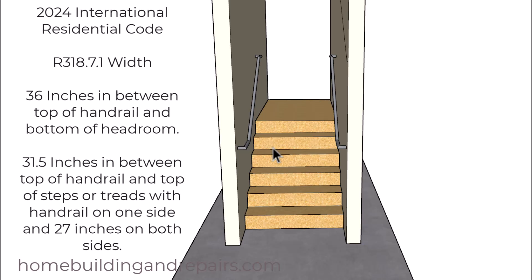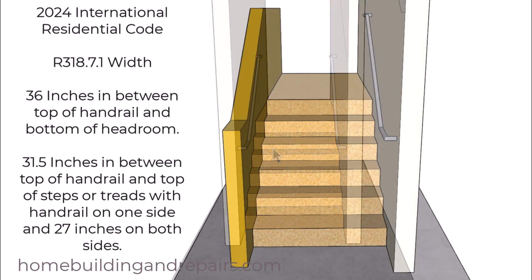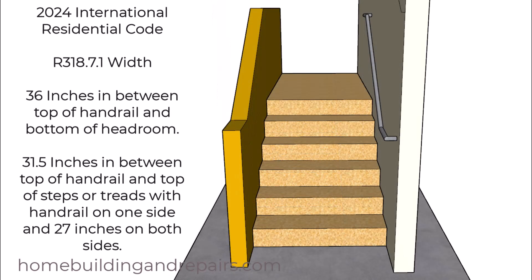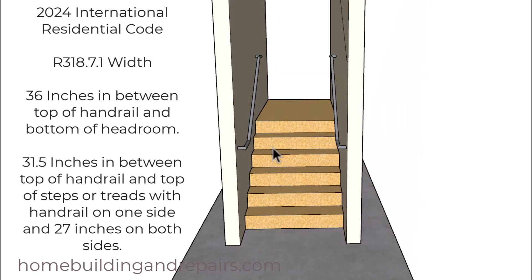Let's get started with the first building code from the 2024 International Residential Codebook. The building code reference number is R318.7.1, and it's basically asking for 36 inches in between the top of the handrail and the bottom of the headroom height. Next, we're looking at 31.5 inches in between the top of the handrail and the top of the steps or treads — that's if you have a handrail on one side. If you have a handrail on two sides, it's going to be 27 inches in between the handrailing. These are minimum measurements; they can be larger, just can't be smaller.